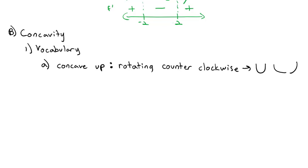Inflection points are where the concavity changes. For example, a graph could be first concave up and then switch to concave down — right in the center the rotation direction changes. The classic x³ also starts out counterclockwise, then turns clockwise — concave up changing to concave down. Just like a critical point is when the derivative equals zero, inflection points are found by looking at the second derivative f''(x) and seeing when it's zero or undefined.